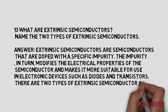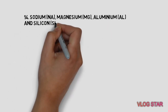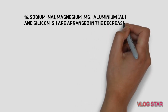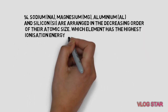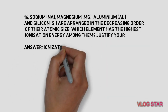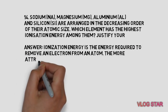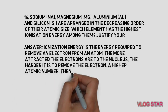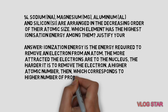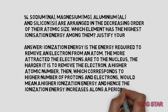Sodium, Magnesium, Aluminium, and Silicon are arranged in decreasing order of their atomic size. Which element has the highest ionization energy among them? Justify your answer scientifically. Ionization energy is the energy required to remove an electron from an atom. The more attracted the electrons are to the nucleus, the harder it is to remove them. A higher atomic number corresponds to a higher number of protons and electrons, meaning higher ionization energy. Thus ionization energy increases along a period, so Silicon has the highest ionization energy.